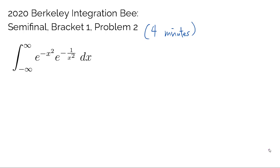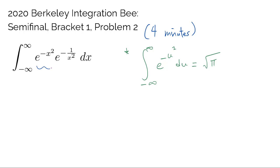One of the first things that may strike you when you look at this problem is that it seems to be intimately connected to what's known as the Gaussian integral. The Gaussian integral is the integral from negative infinity to infinity of e to the negative u squared du, and this is well known to evaluate to square root of pi. This is probably one of those integrals that participants were assumed to know beforehand, and we will take this for granted — you can easily look up multiple proofs online. Knowing this, we may be prompted to try to turn the exponent of our integrand into something close to u squared, because currently we have e to the negative x squared plus 1 over x squared, and if we can convert this to e to the negative u squared and generate the appropriate du outside, we can connect this to the Gaussian integral.